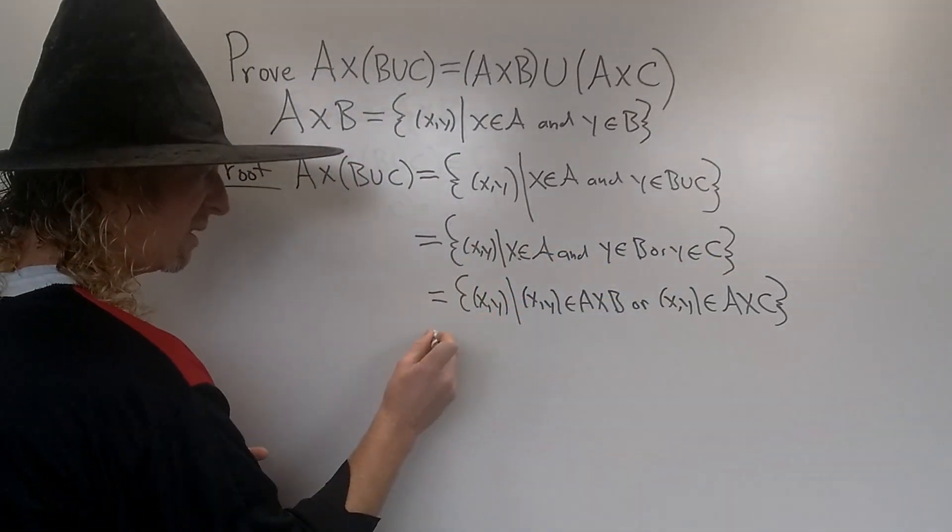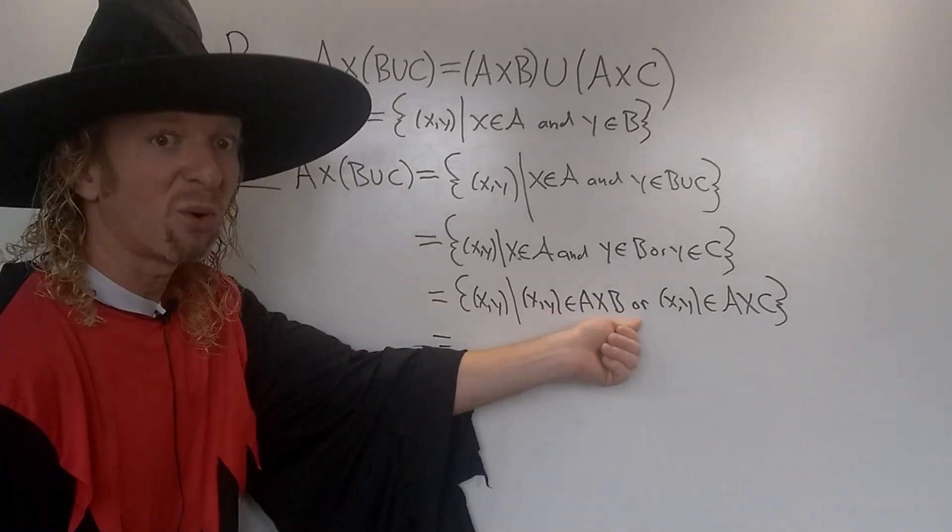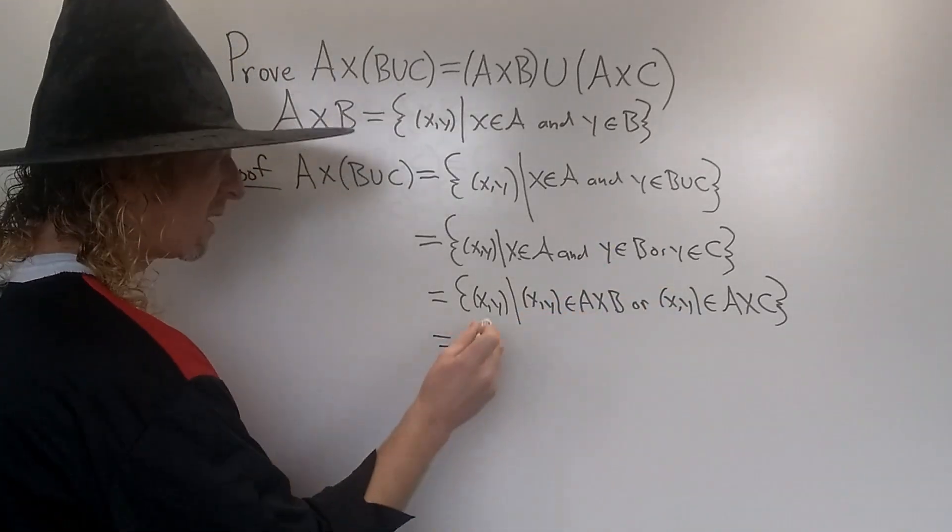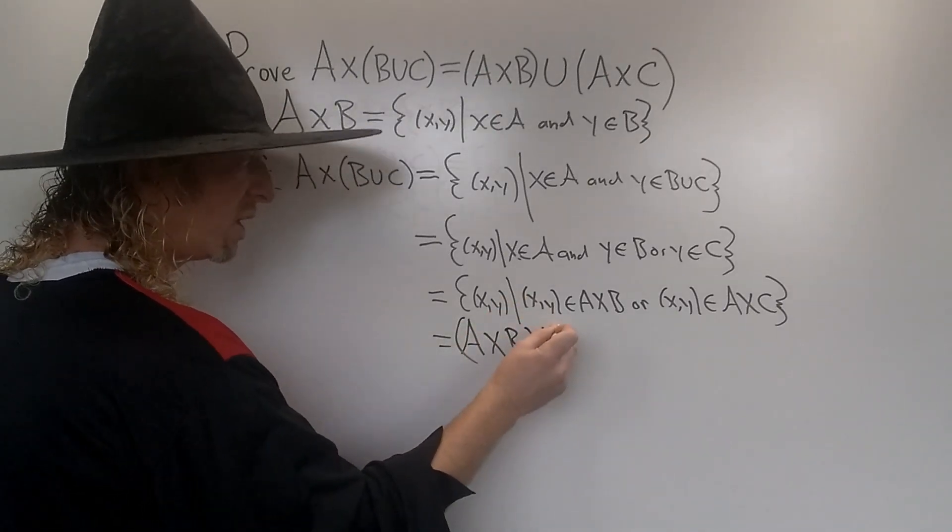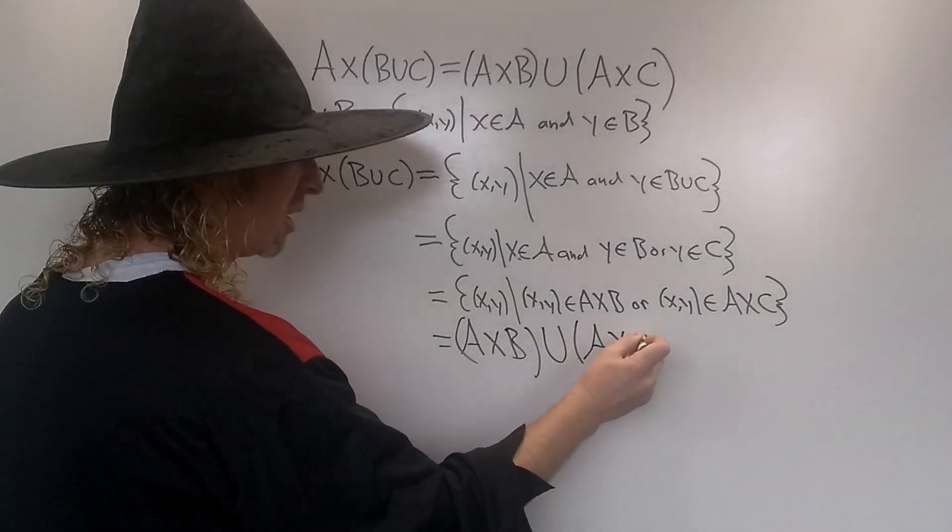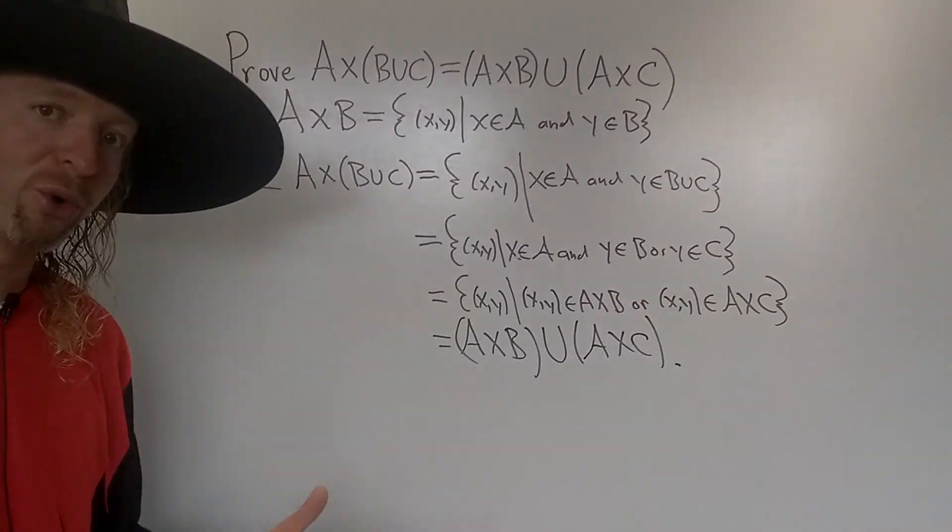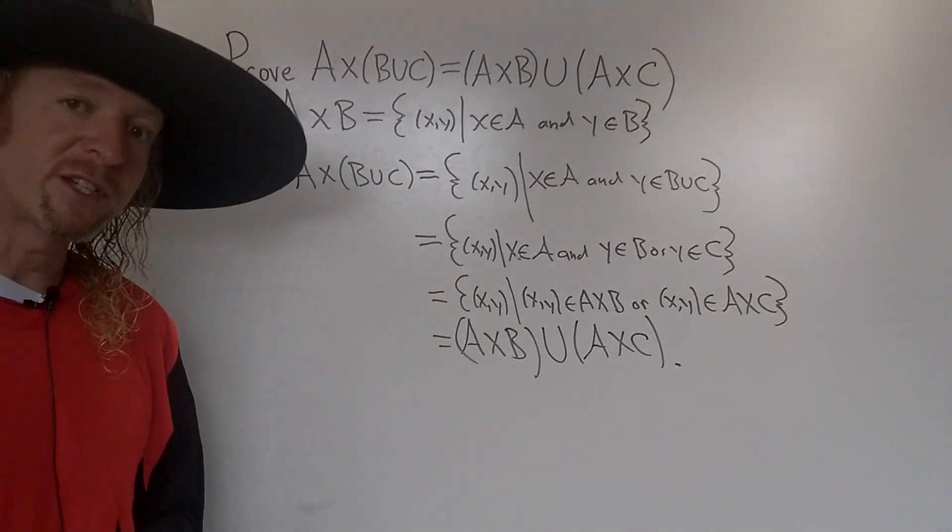And so what does this mean? This means that (x,y)∈A×B or (x,y)∈A×C. That means that this is the set by definition (A×B)∪(A×C), which is precisely what we had to show in the proof. So that completes the proof.